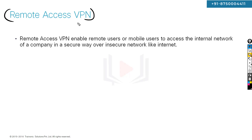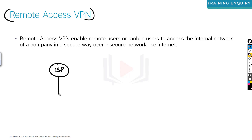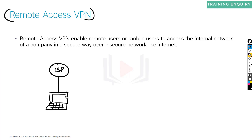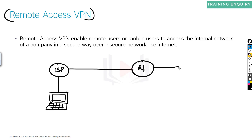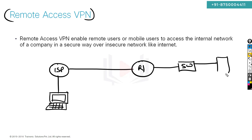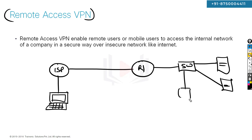We can understand it clearly using a logical diagram. We have an ISP — internet service provider. To the ISP, a remote user is connected. ISP is connected with a company headquarter router R1. R1 is connected with a switch. The switch is connected with servers, as well as clients.